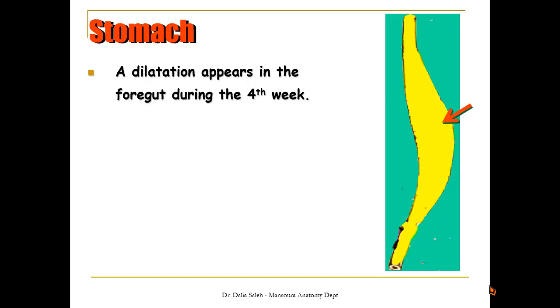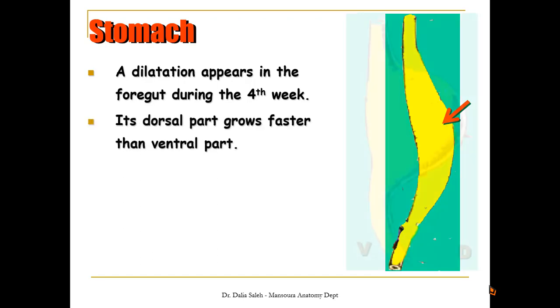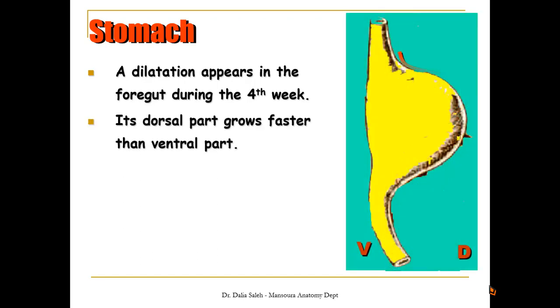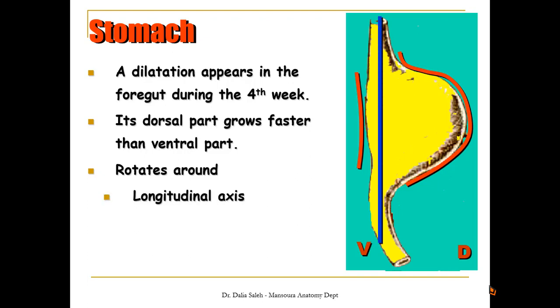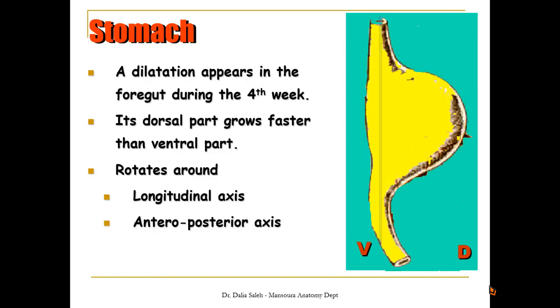The stomach begins its development as a dilatation that appears in the foregut during the fourth week of development. Its dorsal part grows faster than its ventral part, and then it rotates around two axes: its longitudinal axis, rotating in a clockwise direction, and also around its anteroposterior axis.